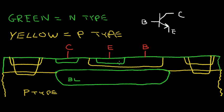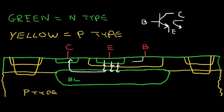One thing to notice is that underneath the emitter, the base region is very thin. That is so that the electrons emitted into this base will diffuse over into the collector region and go out the collector terminal. We always think in terms of positive current, so the positive current will go in the opposite direction of the electrons — from collector to emitter — with some base current flowing into the base terminal.